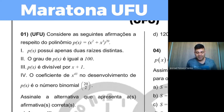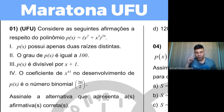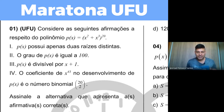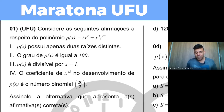A questão diz: considere as seguintes afirmações a respeito do polinômio P(x) = (x² + x³)²⁰. Primeira afirmação: P(x) possui apenas duas raízes distintas? Segunda: o grau de P(x) é igual a 100? Terceira: P(x) é divisível por x + 1? Quarta: o coeficiente de x⁴³ no desenvolvimento de P(x) é o número binomial C(20,2)? Assinale a alternativa que apresenta as afirmativas corretas.